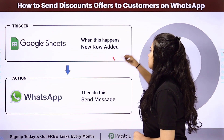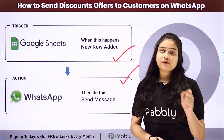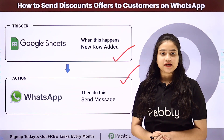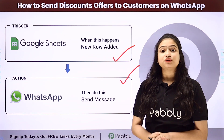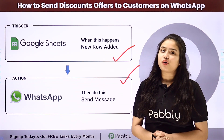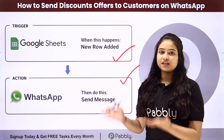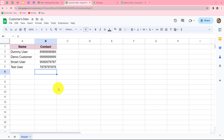Here we have Google Sheets as our trigger, and in action, I am going to use Vati for sending WhatsApp template messages to my customers. If you want, you can also use any other application such as Interakt or AISENSY. We will connect both of them using Pabbly Connect to automate this entire process. In this video, we will learn how to automatically send discount or festive offers to our customers on WhatsApp without any manual efforts.